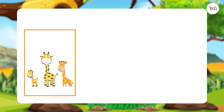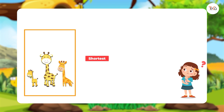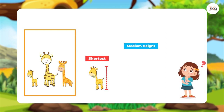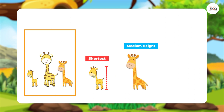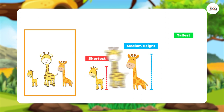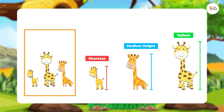Now, can you help me put these three giraffes in order from shortest to tallest? Which one is the shortest? Did you say this one? Great — put it first. Which one is medium height? Did you say this one? Well done — put it second. Which one is the tallest? Did you choose this one? Brilliant — put it last.